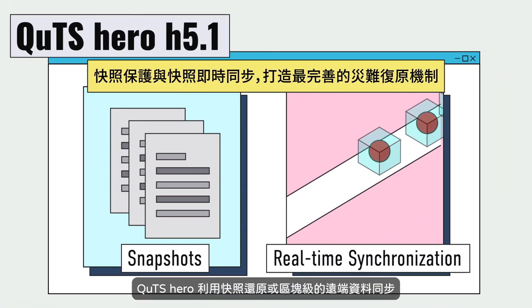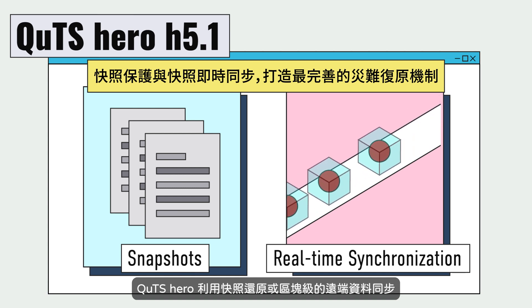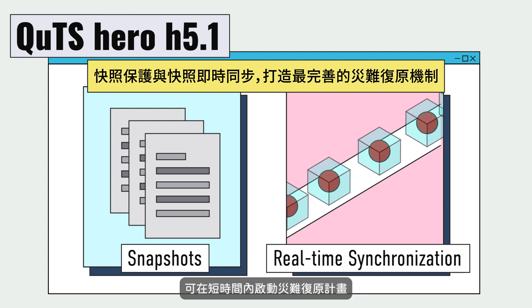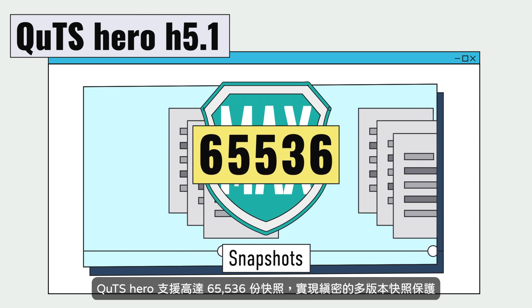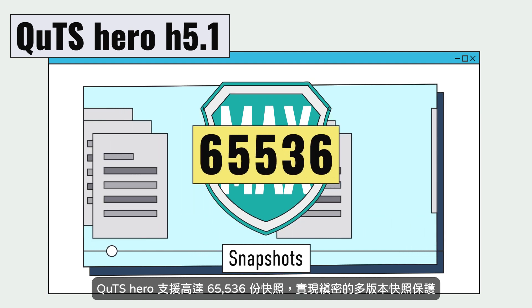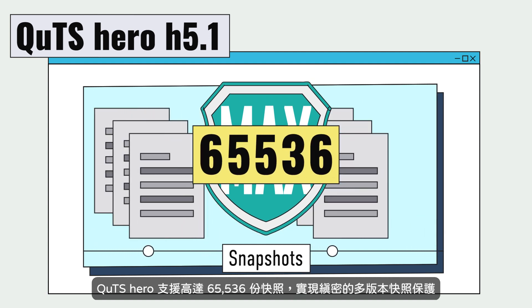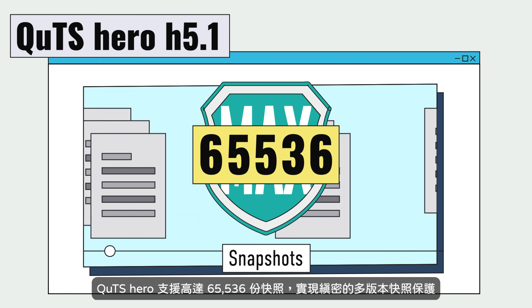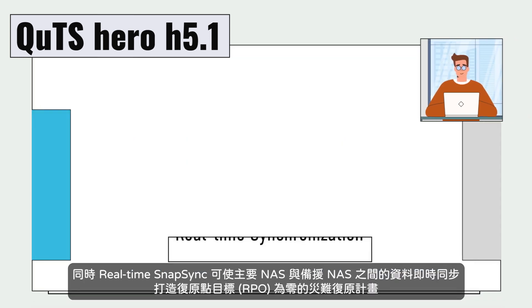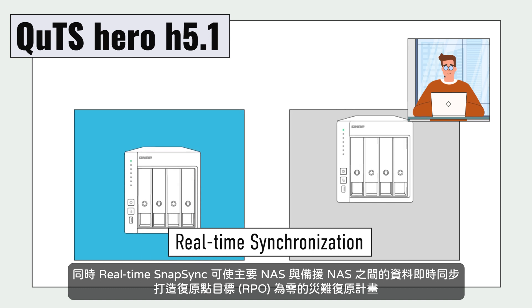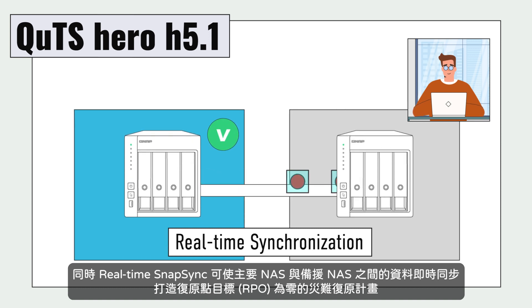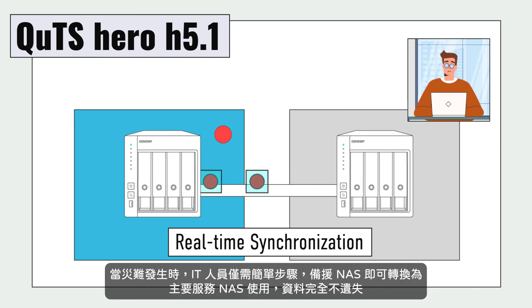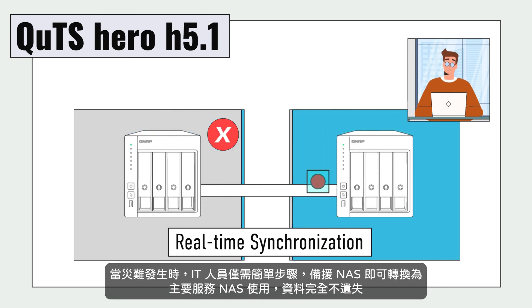QTS Hero assists disaster recovery through snapshot restoration or block-level remote synchronization, supporting up to 65,536 snapshots, ensuring the protection of the latest versions of your files and data. Moreover, real-time snapsync keeps data synced between two NAS systems to ensure RPO zero.